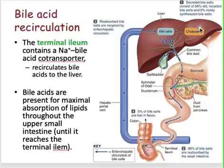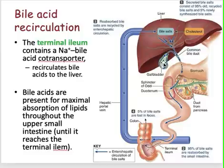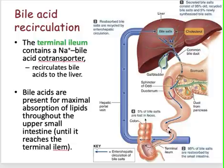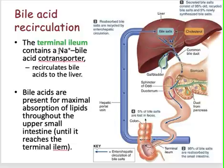From cholesterol, your cholesterol is converted into your bile salts, as we have discussed earlier. This bile is stored in the gallbladder, and the gallbladder releases bile in response to food in your duodenum. Your bile salts will now facilitate the absorption of your fat all throughout your intestine. And then, when it reaches your terminal ileum, the last part of the small intestine, 95% of those bile salts will now be reabsorbed through a sodium bile acid co-transporter.